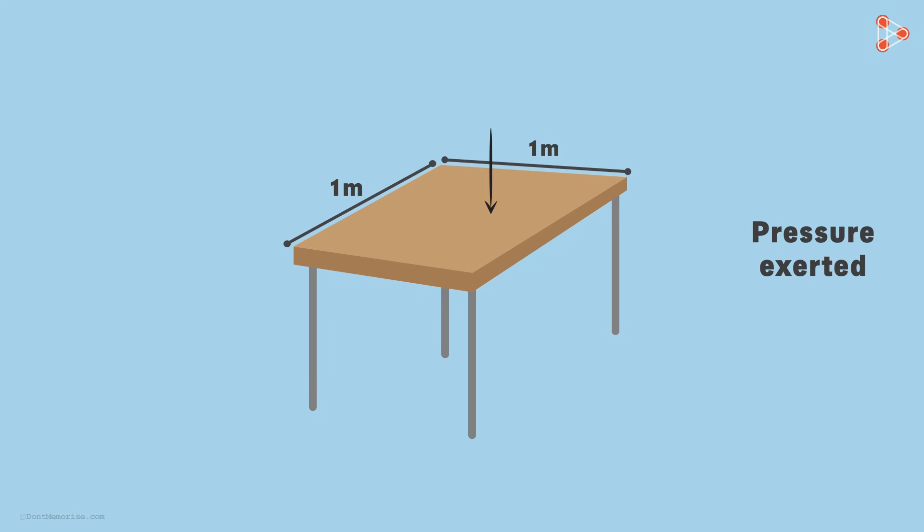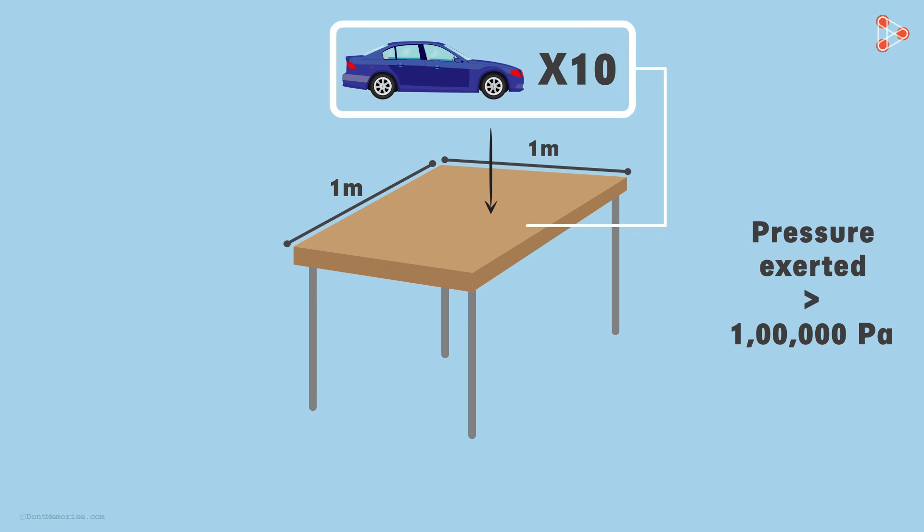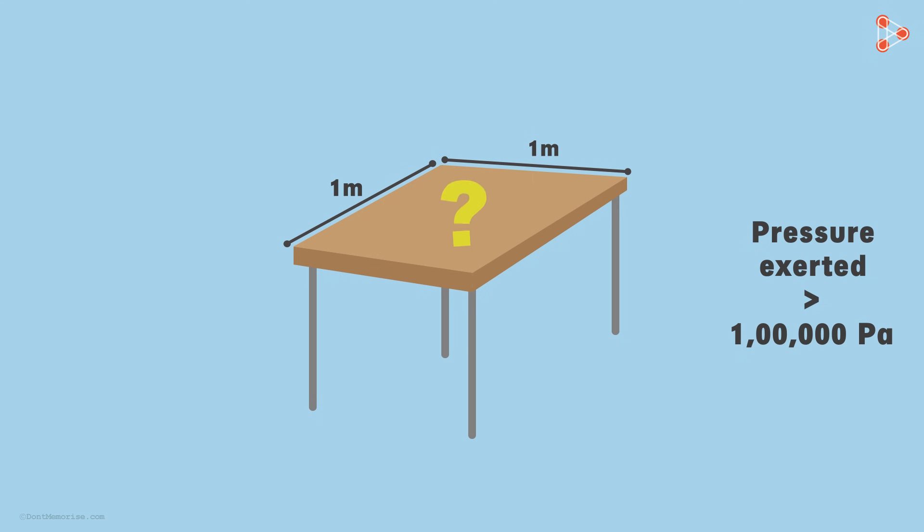This pressure pushes and pulls objects on the surface of the earth. For example, if I take a table with the upper surface of 1 by 1 meter, the pressure exerted by the air on the table in the downward direction is greater than 1 lakh Pascals. This is equivalent to 10 cars being put on this table. Yes, 10 cars! I know what you must be thinking. Why doesn't this surface collapse under this huge pressure? How does it handle such massive pressure acting down on it?